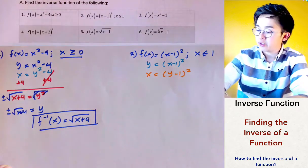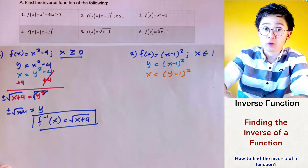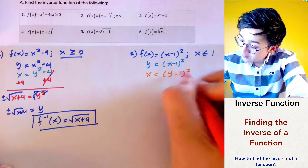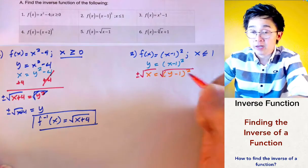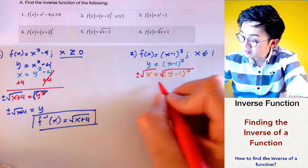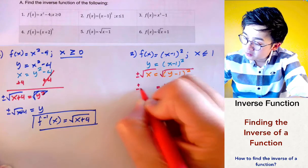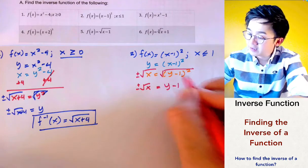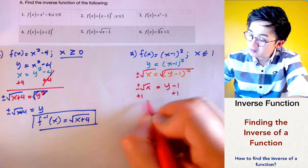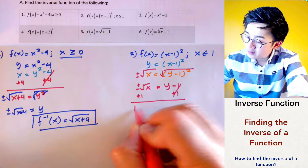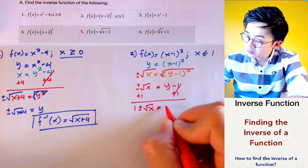Now we're ready to solve for y. We take the square root of both sides, giving us ±√x = y - 1. By adding 1 on both sides, we get y = 1 ± √x.